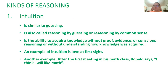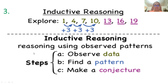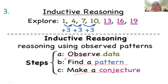The third type of reasoning is inductive reasoning. Inductive reasoning is reasoning using observed patterns. The steps are: first, observe the data; second, find the pattern; and third, make a conjecture. So inductive reasoning requires you to observe, find a pattern, and then make a conjecture based on that pattern.